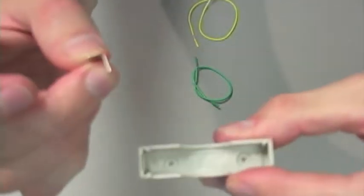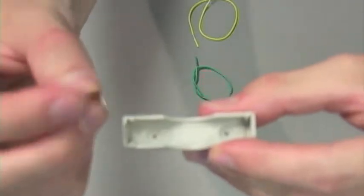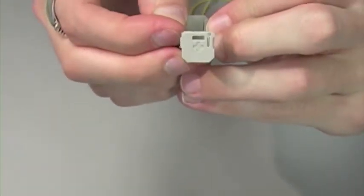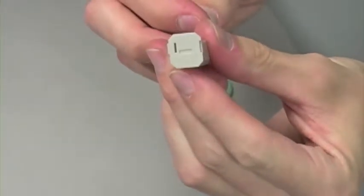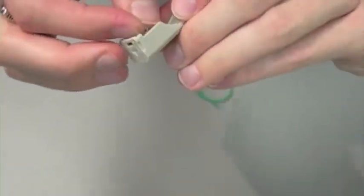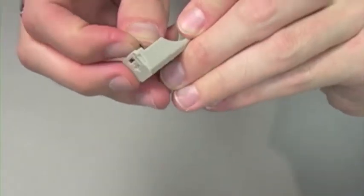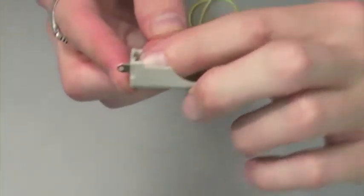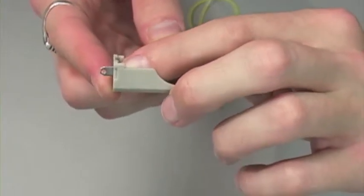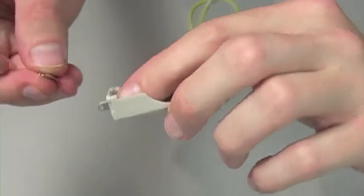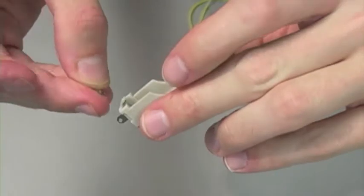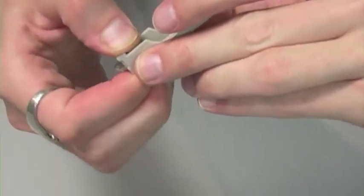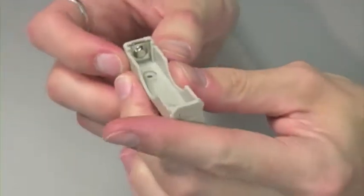For step one, you're going to take your two small battery terminals and thread them through the ends of the battery case. Once you have your small battery terminal in place, you're going to take battery terminal B, C and slide that in over top of it so that it looks like this.